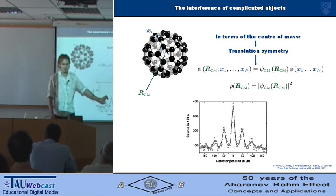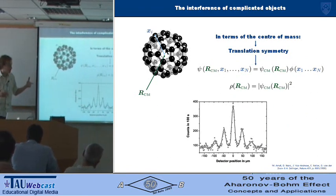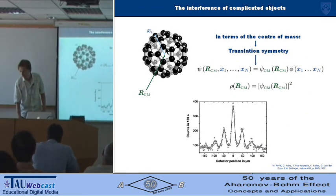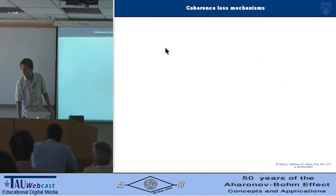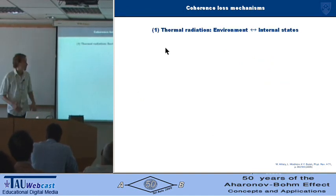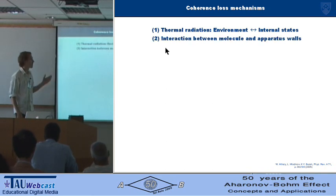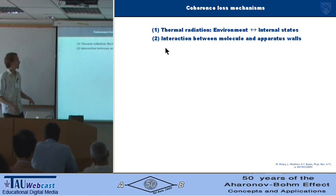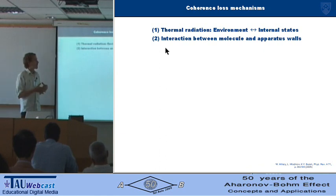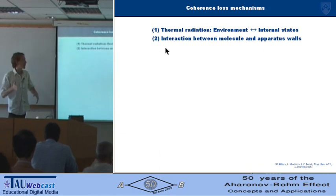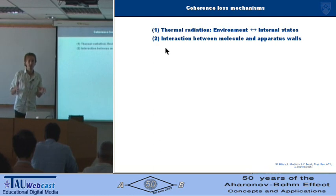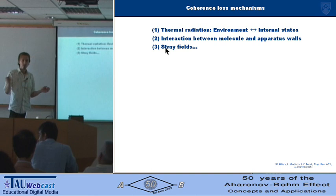So if we wanted to increase the contrast of this interference pattern, what could we do? Well, several ways you could lose translational symmetry and therefore lose this separable state: there's thermal radiation between the environment and the internal states, the interaction between the molecule and the walls of the apparatus—maybe by the Casimir-Polder interaction—and stray fields; maybe you haven't shielded a cable in your experiment, something like that.